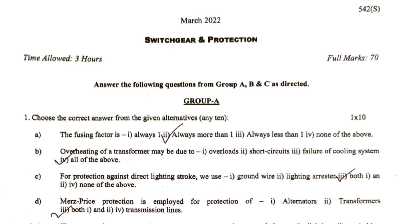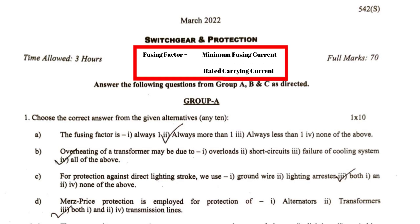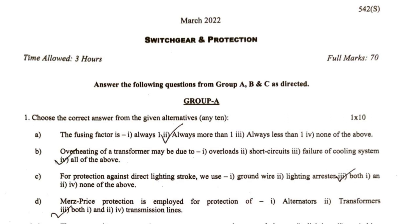The first question is: the fusing factor is always what? We know this is a ratio of the fusing current to the rated current of a fuse. The fusing current is the current at which the fuse wire melts, and the rated current is the current which is steadily carried by the fuse under normal operating condition. Definitely the fusing current is greater than the rated current, so the ratio will always be greater than one. The fusing factor will always be more than one, so option two is the correct answer.